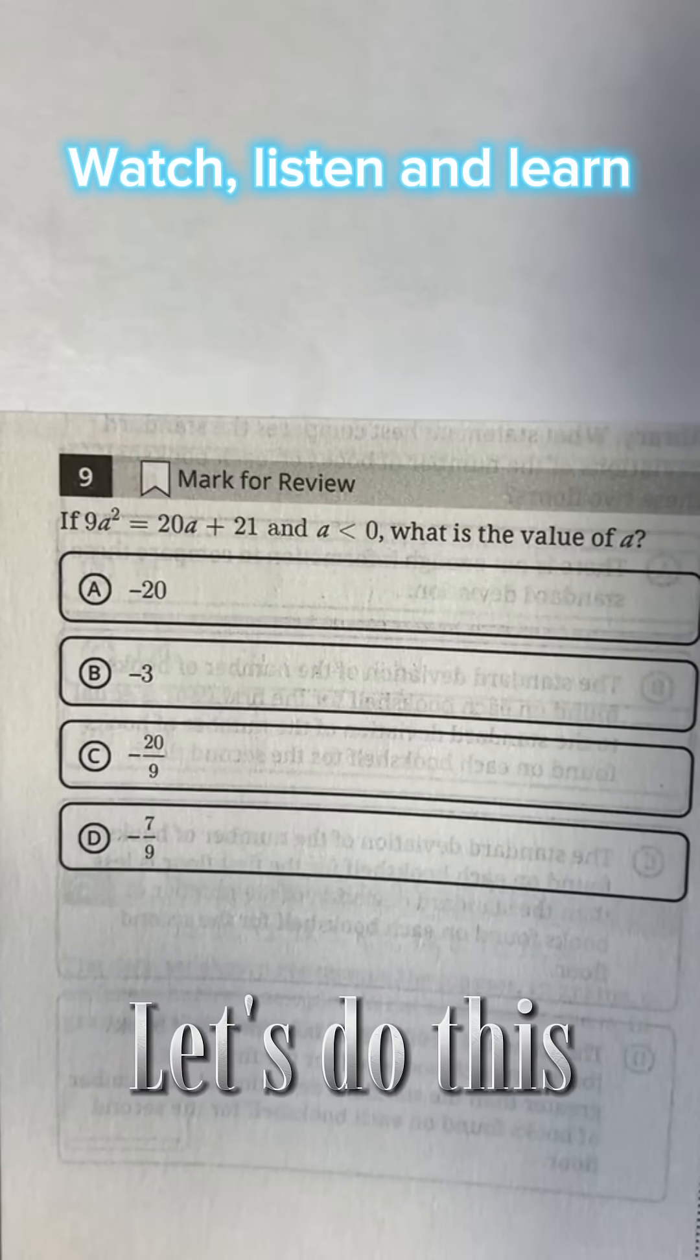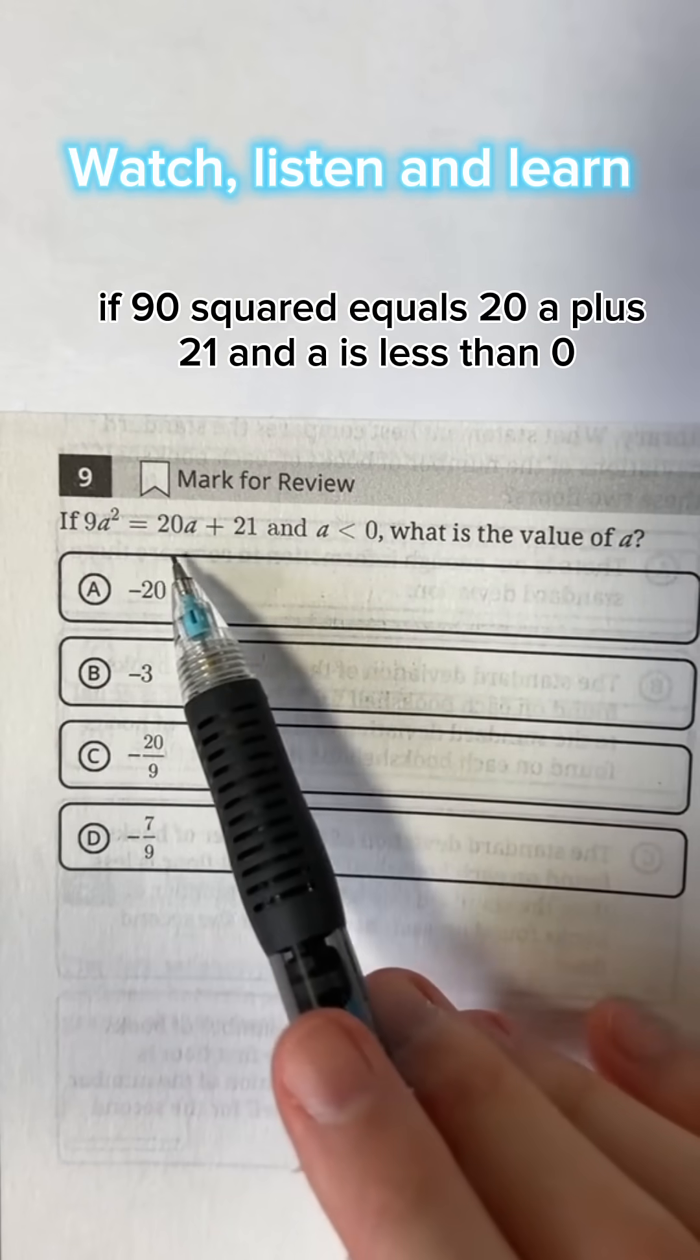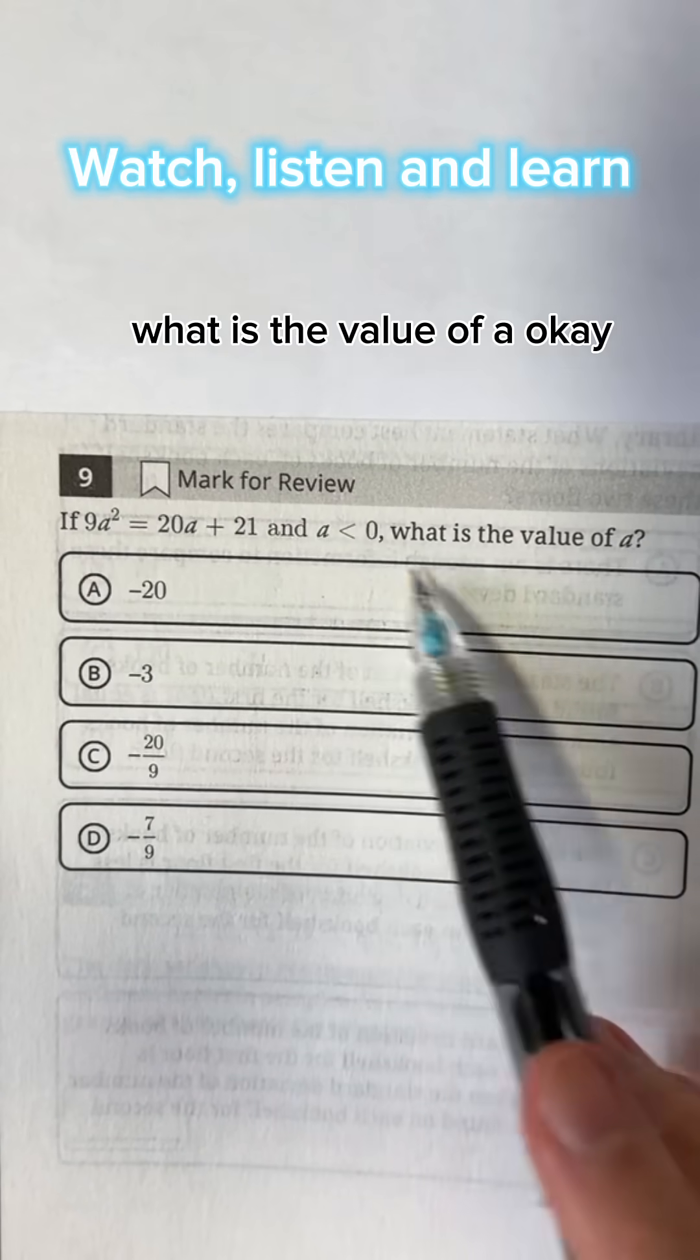Let's solve this pretty simple problem. If 9a squared equals 20a plus 21 and a is less than 0, what is the value of a?